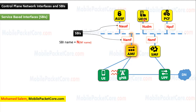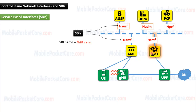Any network function in the Control Plane that needs to communicate with the AMF uses the NAMF service-based interface. Any network function that needs to communicate with the SMF uses the NSMF service-based interface. Any network function that needs to communicate with the PCF uses the NPCF service-based interface. The same applies to all network functions working in the Control Plane.